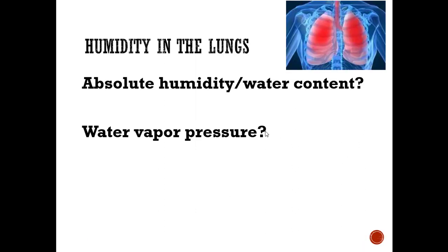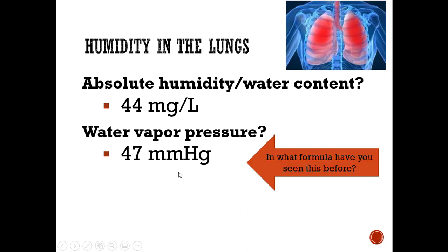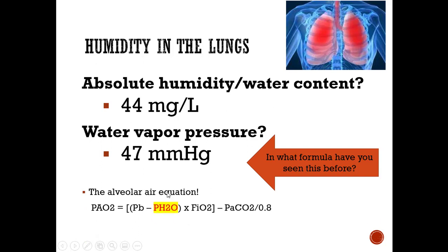Looking at humidity in the lungs — absolute humidity, water content, water vapor content — these are often rounded to 44 milligrams per liter. These are big ones to memorize; they'll keep coming back. Also worth noting: this 47 millimeters of mercury is the exact number you see in your alveolar air equation. That's where it comes from — it's the pressure that water exerts in air, which is why we subtract it from atmospheric pressure.